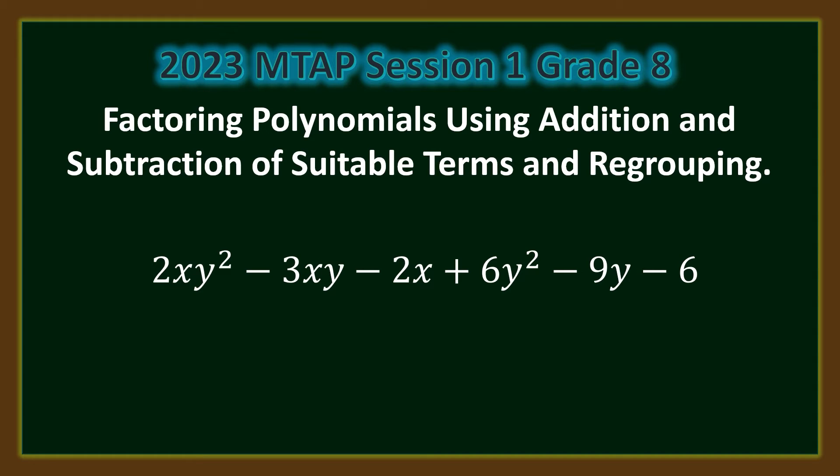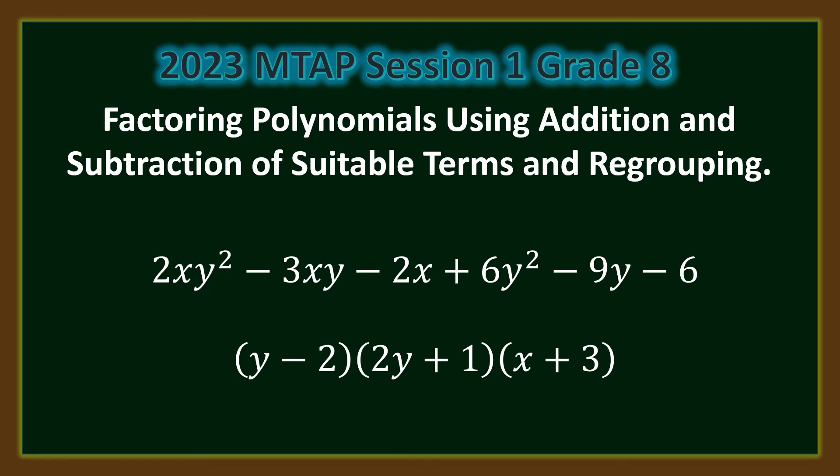If you do it properly, the answer is the binomial (y minus 2) times the binomial (2y plus 1) times the binomial (x plus 3).